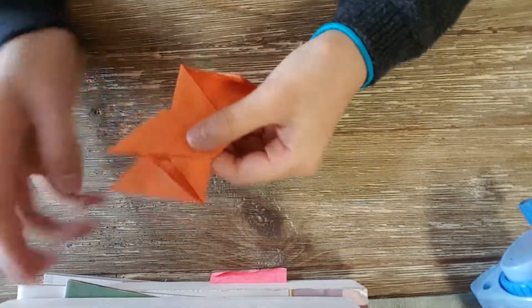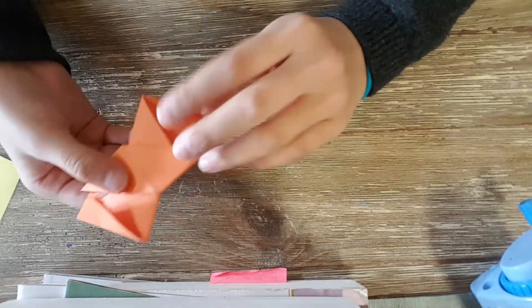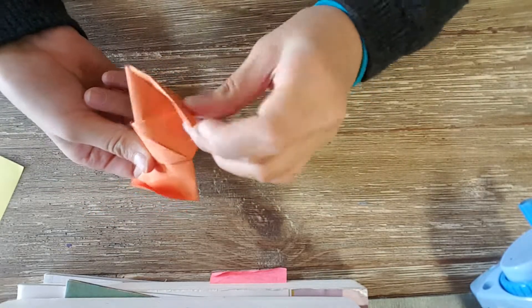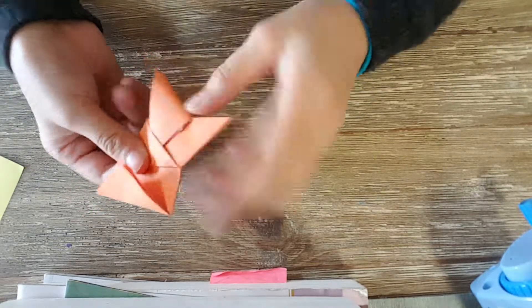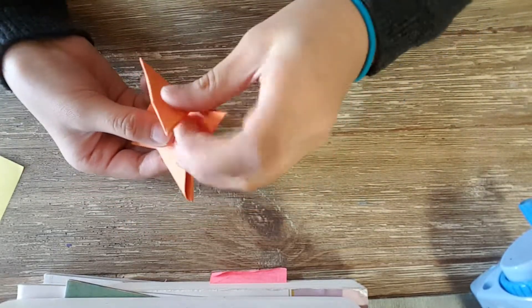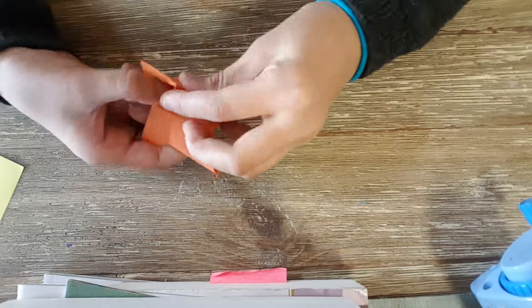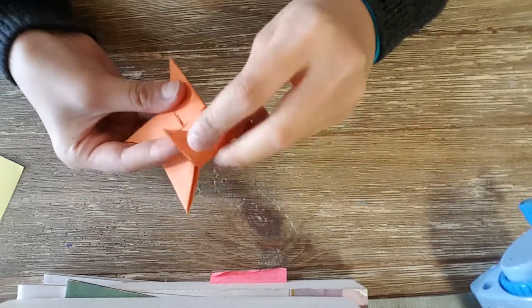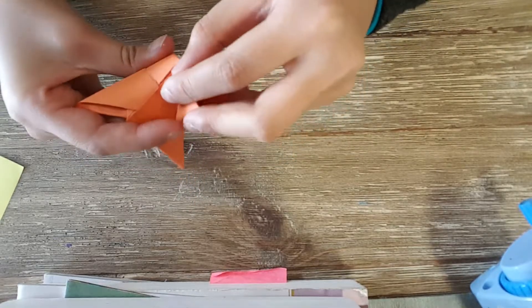You're going to flip it over. This side you can't open, so you're going to take the flap, push it up, bend it, and just squeeze it through. Flip it up and turn it around, and do the same thing: bend it and just put it through.